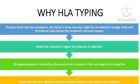Why HLA typing? During a bone marrow transplant, the donor's bone marrow might be considered a foreign body and thereby rejected by the recipient's immune system. The greater the mismatch, the higher the chances of rejection. HLA gene sequence determines the production of proteins that can lead to this rejection, and hence it is important to match the immune signature of the potential donor with that of the recipient.